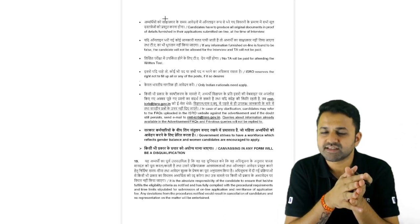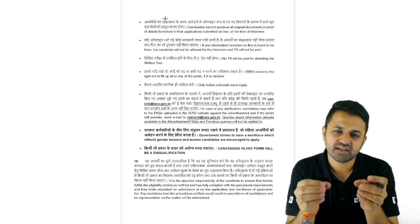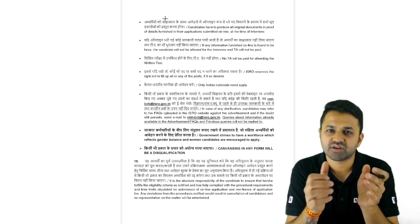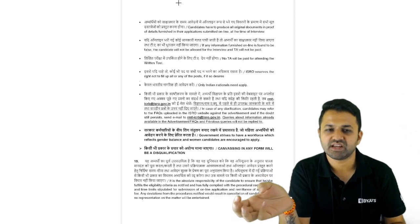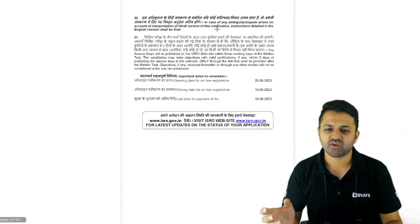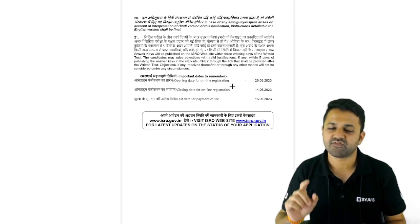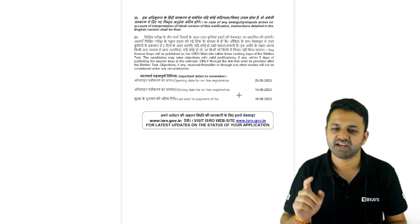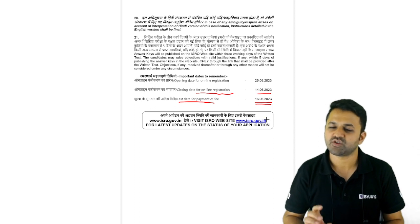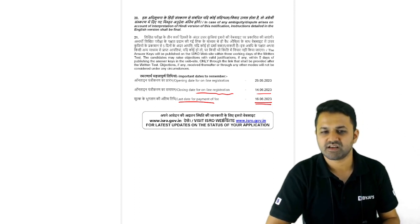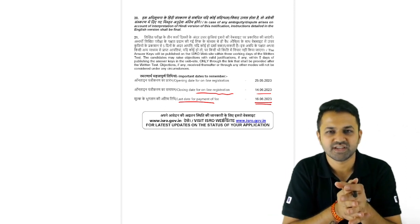That is all the detail about the ISRO notification. Go through the official notification once, and if you need any information, put your query in the comment section and our team will answer it. Don't forget the dates — the online application starts from 25th May and goes up to 14th June, with the last date for fee payment being 16th June. This covers the complete detail for the ISRO Scientist recruitment for Mechanical, Computer Science, and Electronics.